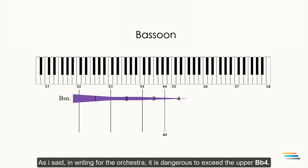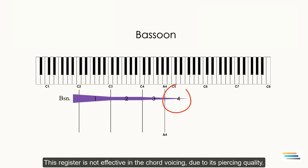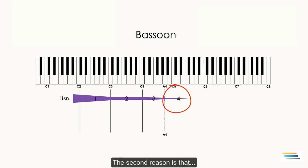As I said, in writing for the orchestra, it is dangerous to exceed the upper B♭4. Only professional players can handle the high F5. Therefore, the safe range for the bassoon is from B♭1 to B♭4. This register is not effective in chord voicing due to piercing quality. The second reason is that only professional players can play in tune in very high register.